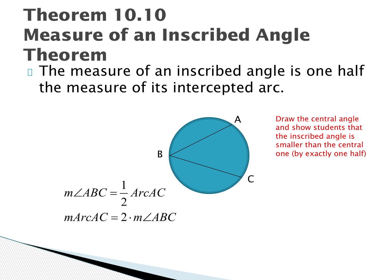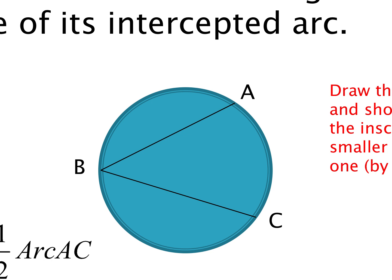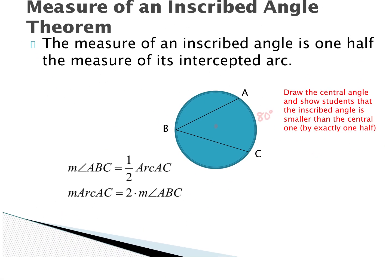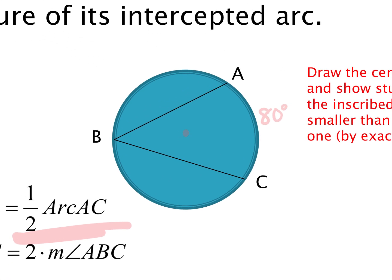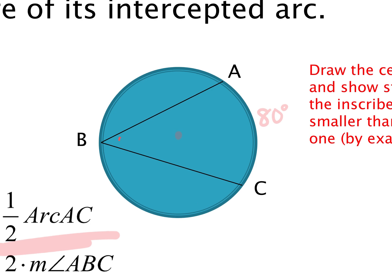Theorem 10.10 is the Inscribed Angle Theorem. If I told you arc AC was 80 degrees, you might naturally say angle B is also 80 degrees — but that's what we had before with central angles, where all angles started from the middle. This angle is not starting from the middle. To figure out this inscribed angle, you must divide the arc by two — so instead of 80 degrees, the measure of angle B is 40 degrees.